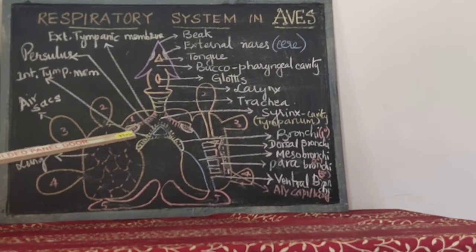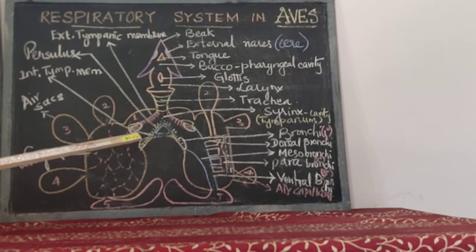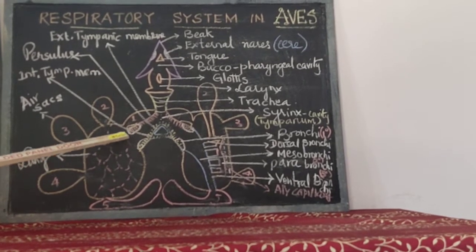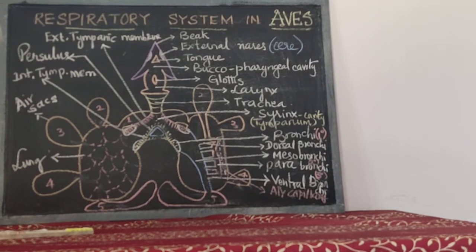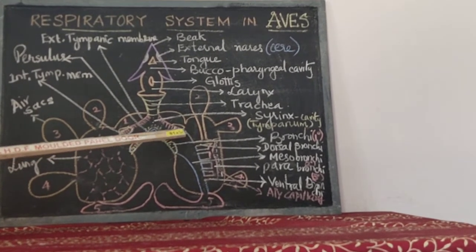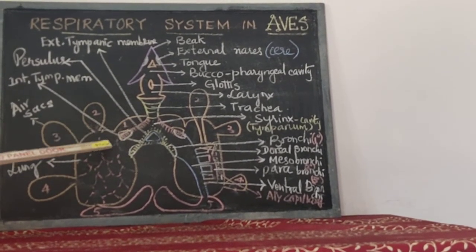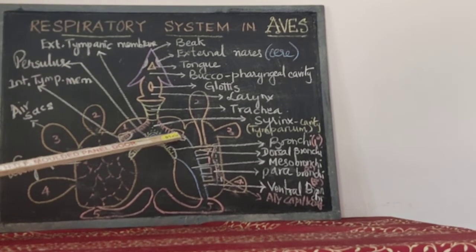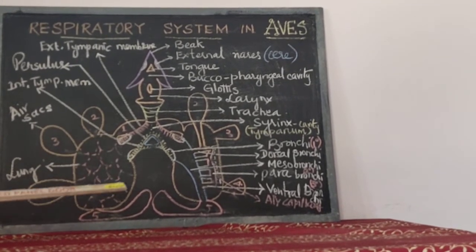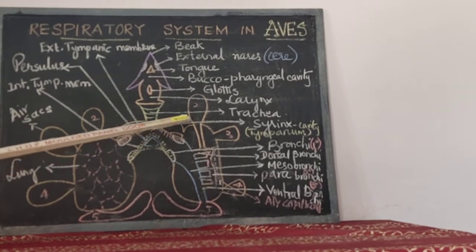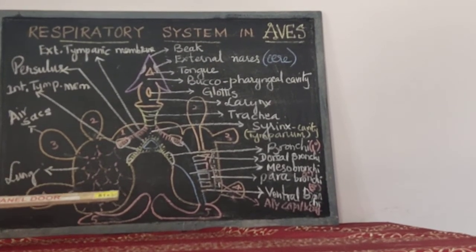The syrinx further leads into short tubular structures on its posterior side, called the bronchi. They are the first branches seen for the trachea down below the syrinx, and these bronchi lead into the actual respiratory organs of the organism — the lungs.